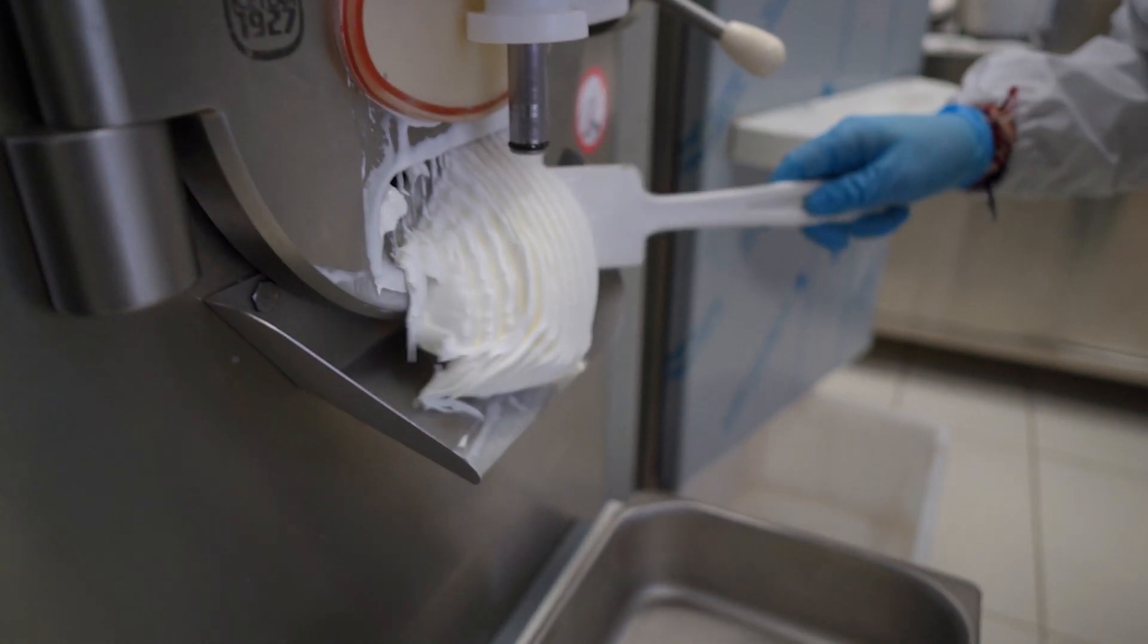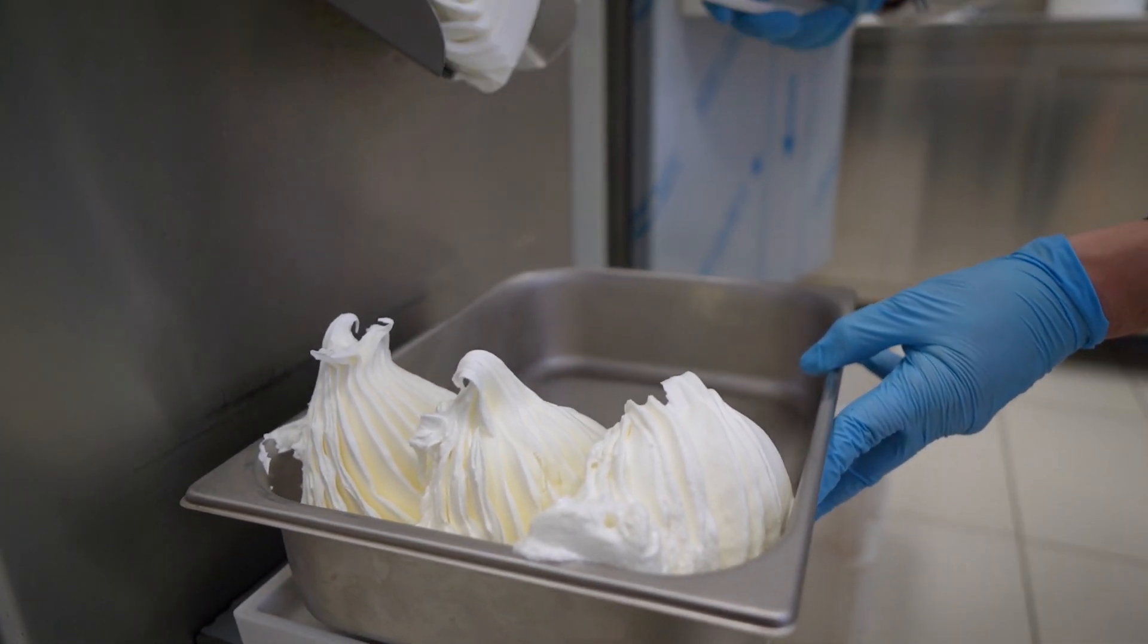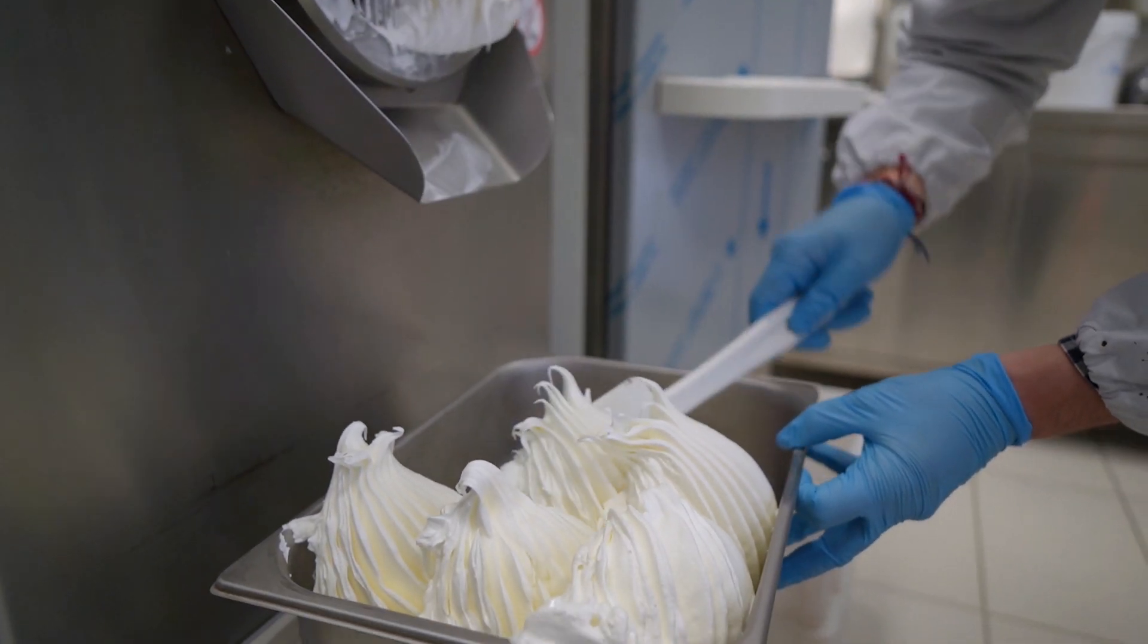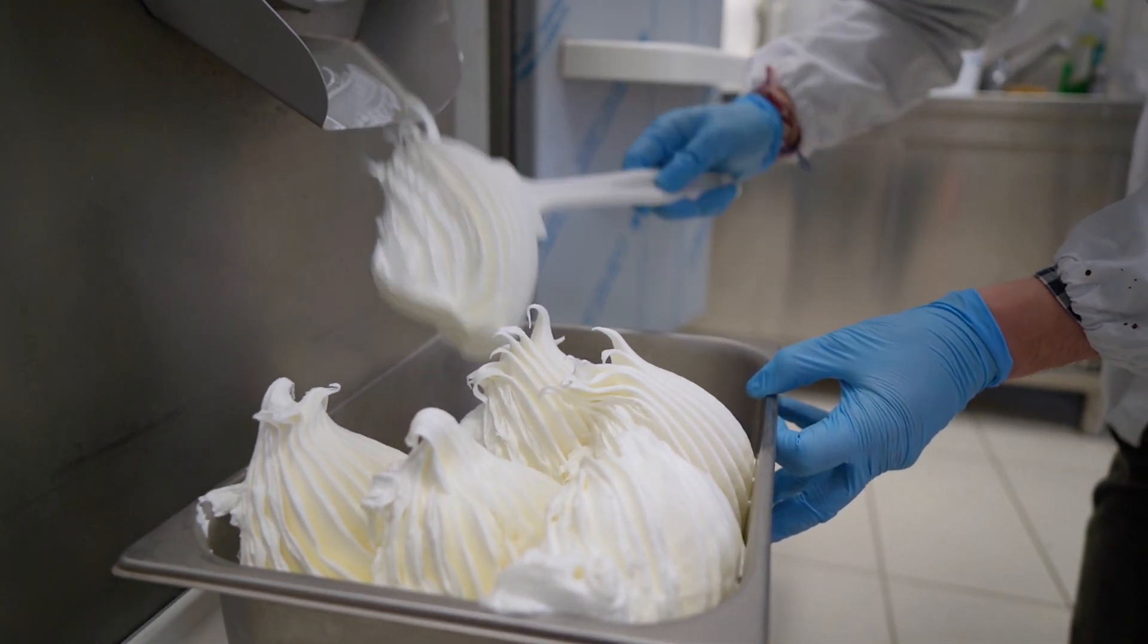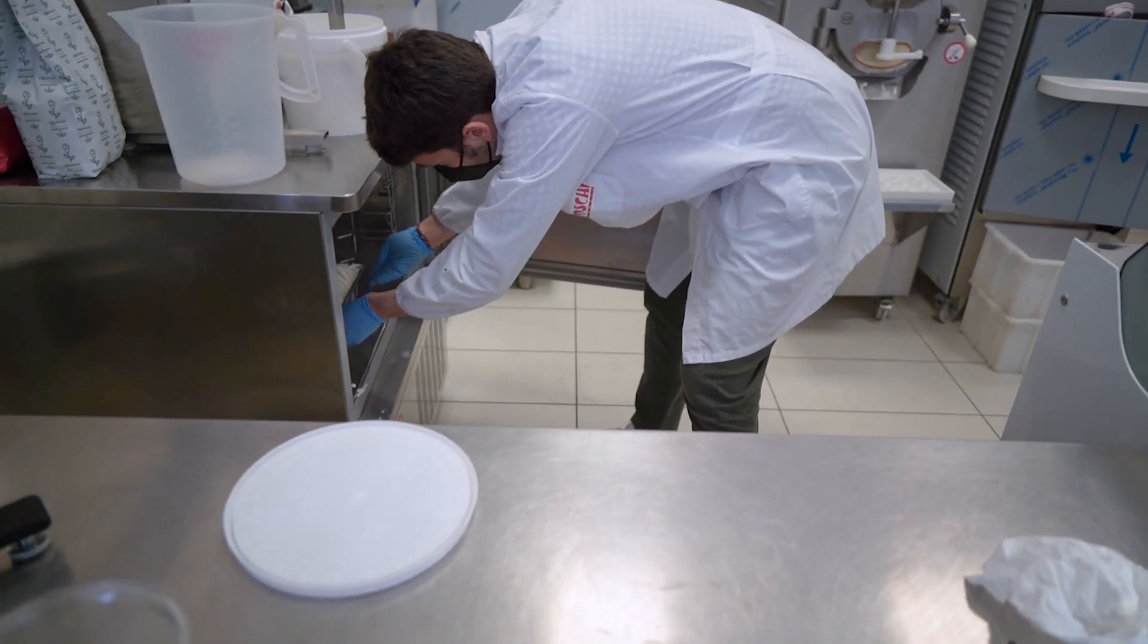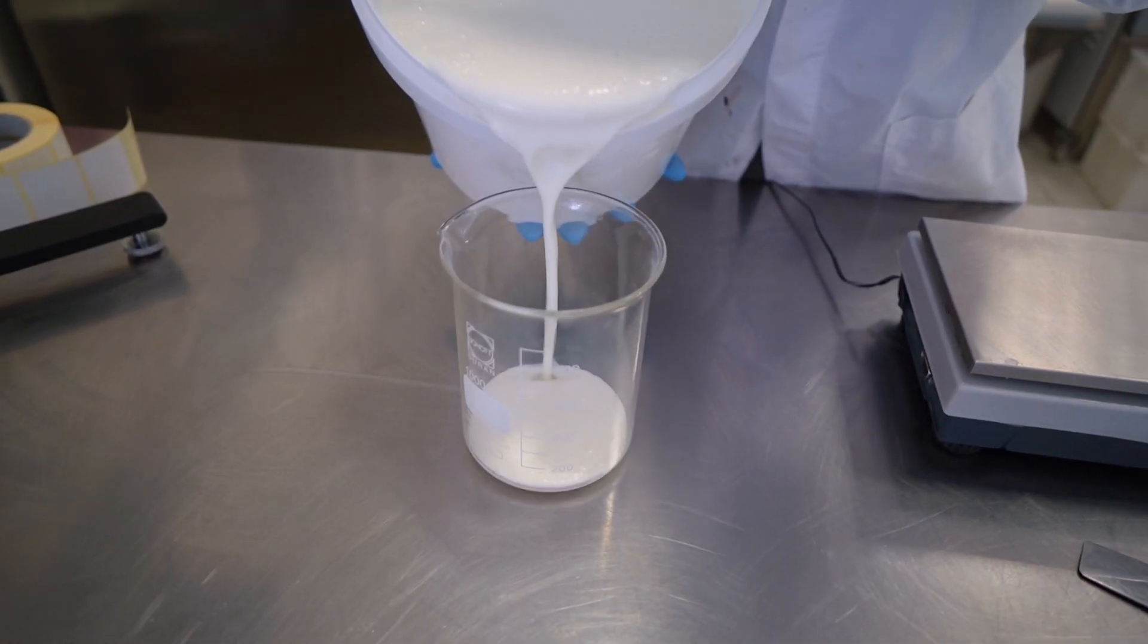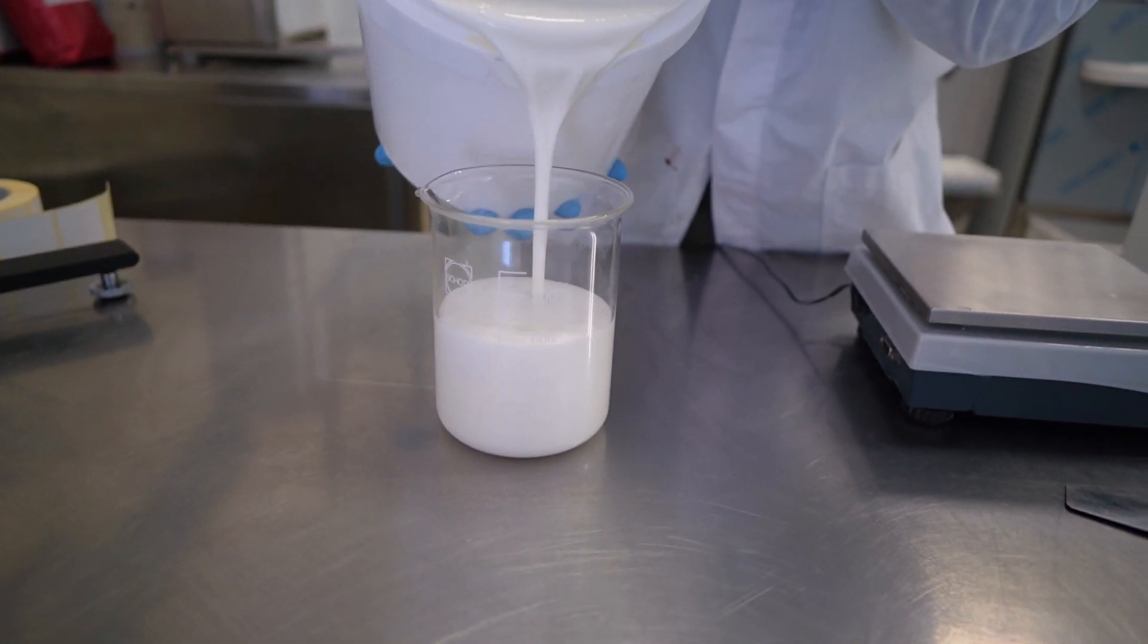This is our first mix. We'll leave it exactly five minutes in the blast chiller, then measure the overrun. Now we put it in for exactly five minutes. Now the second mix. We fill them all to the same volume.